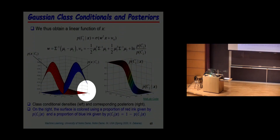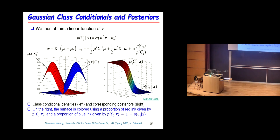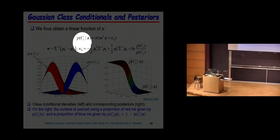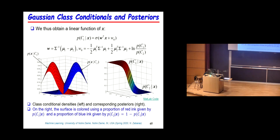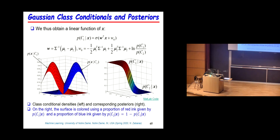Here is the example we saw last week: the class conditional probabilities are Gaussians, and assignments are done based on these probabilities. If you set the threshold at 0.5 — greater than 0.5 is class 1, less than 0.5 is class 2 — then the sigmoid being 0.5 means w-transpose x plus w_0 equals 0, so the separating boundaries are hyperplanes.